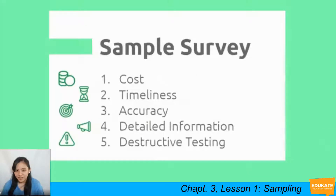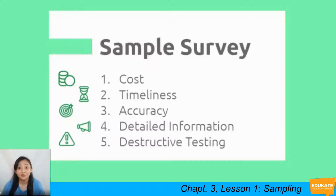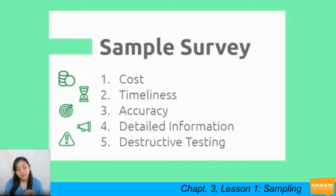The reasons why we do sample surveys come down to five factors. First is cost — a sample often provides useful and reliable information at a much lower cost than a census. Next is timeliness — timely information because fewer data are to be collected. Third is accuracy — you may think that surveying the whole population yields a more accurate result, however data errors can typically be controlled better in smaller groups.